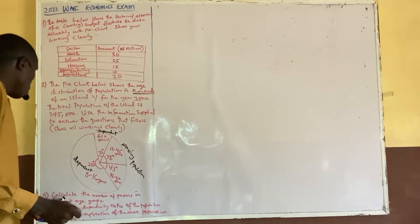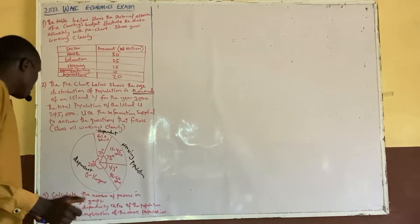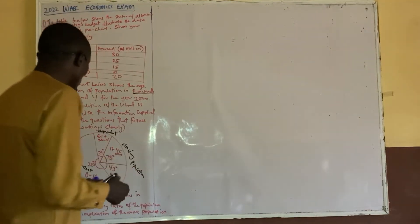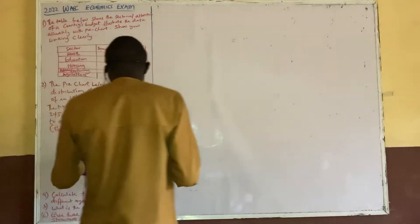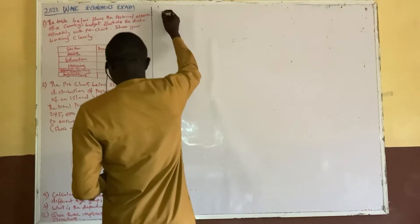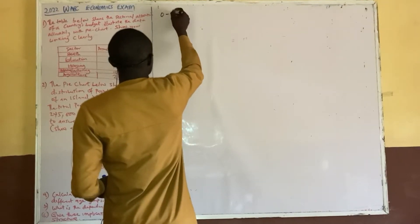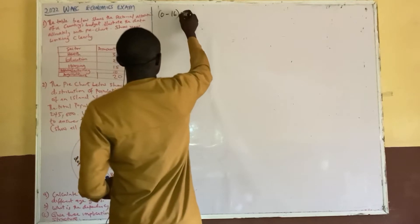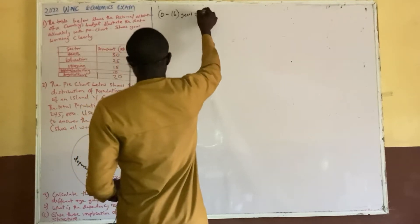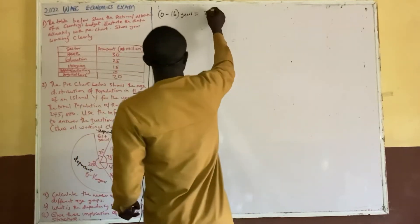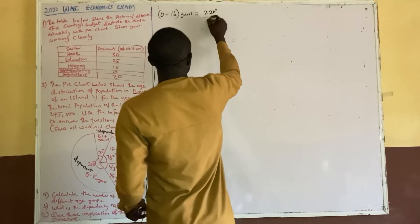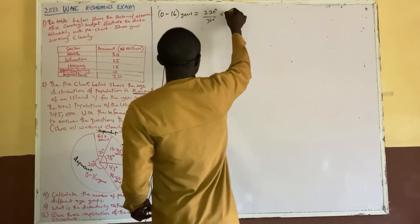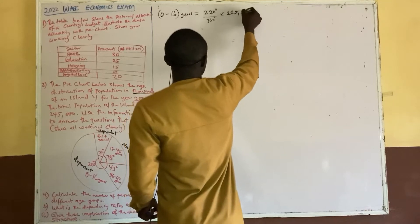So you have to calculate the number of persons in different age groups. The first group is age 0 to 16 years, which has a sector angle of 220 degrees. So we have 220 divided by 360 times the total, which is 245,000.